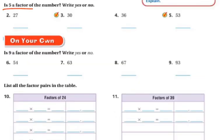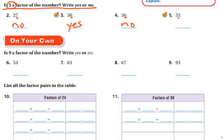Is 5 a factor of the number? Remember, the divisibility rule for 5 is that the number needs to end in either a 0 or a 5. 27 does not end in a 0 or a 5, so the answer is no. 30 ends in a 0, so the answer is yes. 36 does not end in a 0 or a 5, so the answer is no — 5 is not a factor. 53 does not end in a 0 or a 5, so the answer is no.